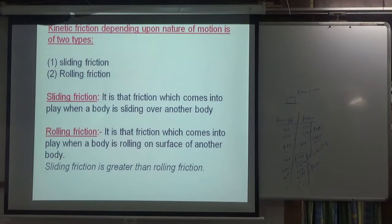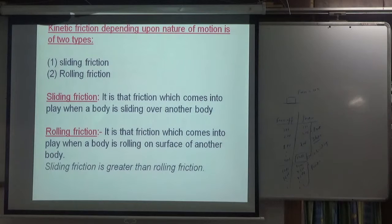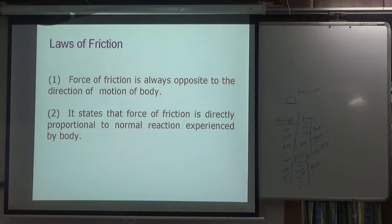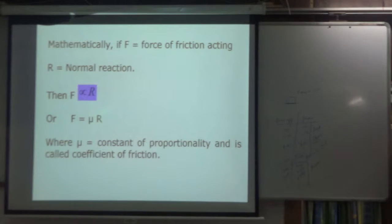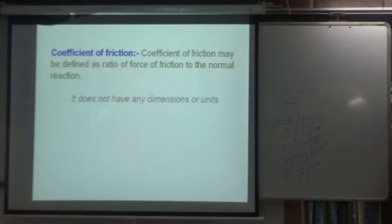Sliding friction on a sliding body is what we call kinetic friction, and there is also rolling friction which involves torques — we will not discuss that here. The laws of friction state: first, force of friction is always opposite to the direction of motion; second, force of friction is directly proportional to the normal reaction, so F = μR, where μ is the coefficient of friction.